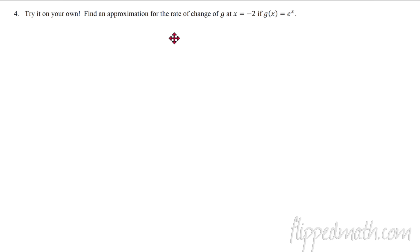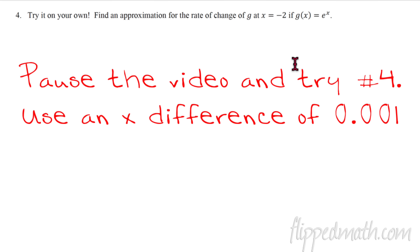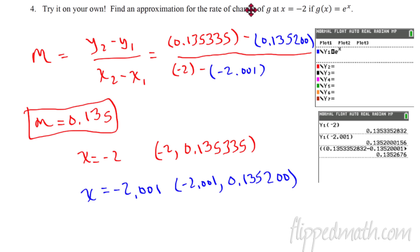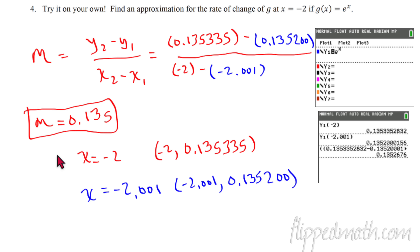Now it's your turn — try number four on your own, any way you want: table settings or the Y1 function notation. Go to the nearest thousandth for accuracy, so use a very small change in x. My approximation: I plugged in x equals negative 2 and x equals negative 2.001, found the slope, and got approximately 0.135 — you can round or truncate, same answer either way.